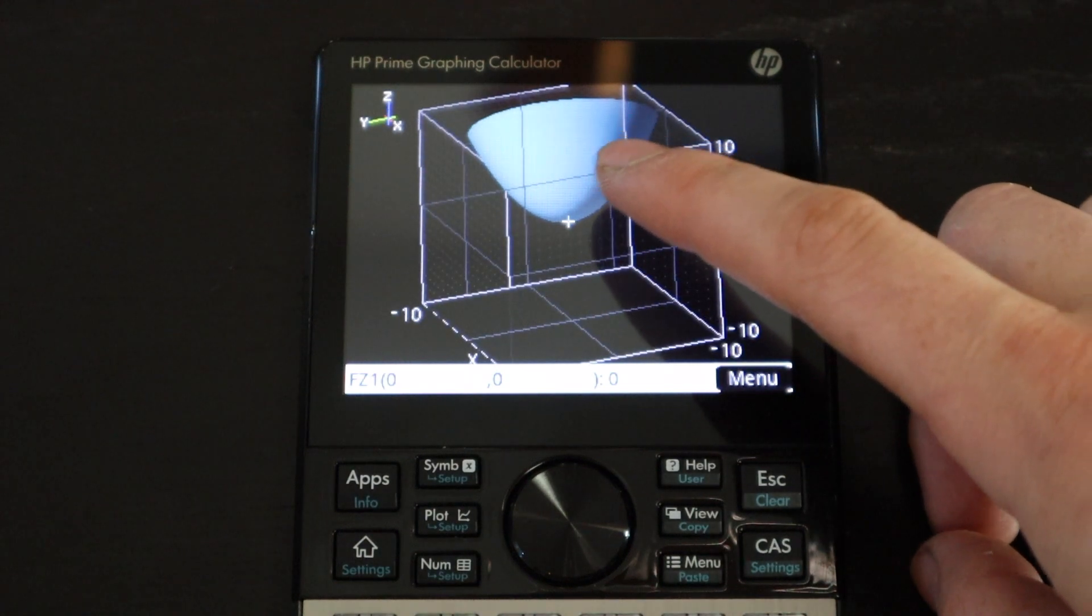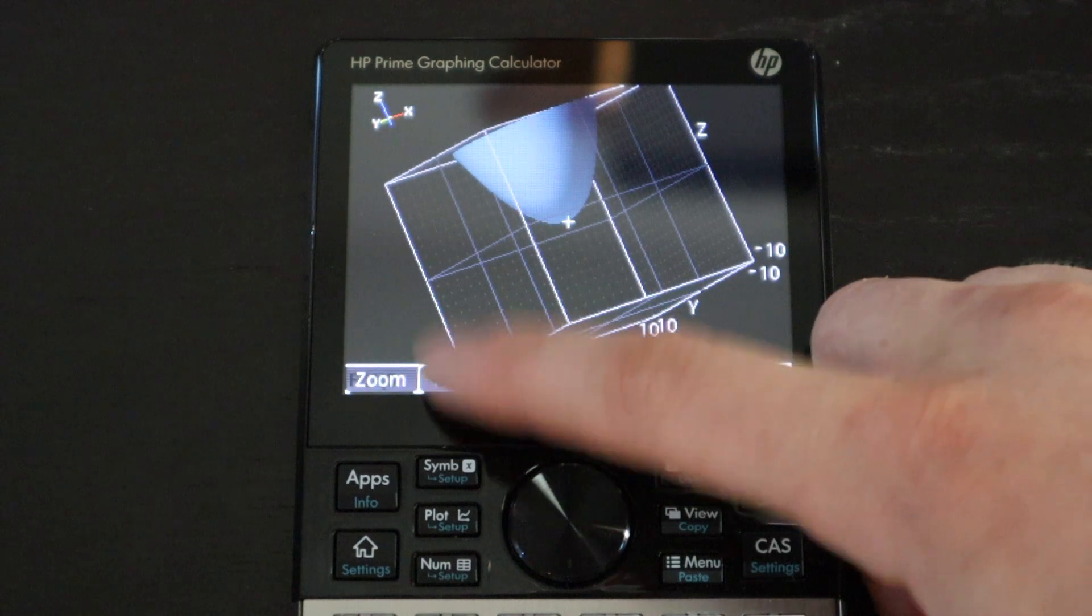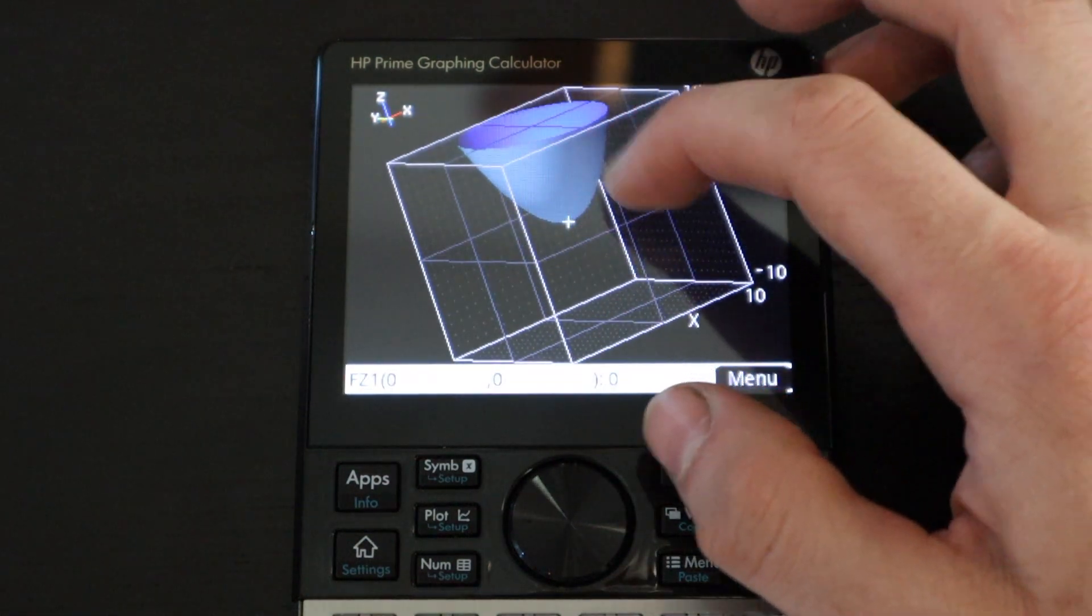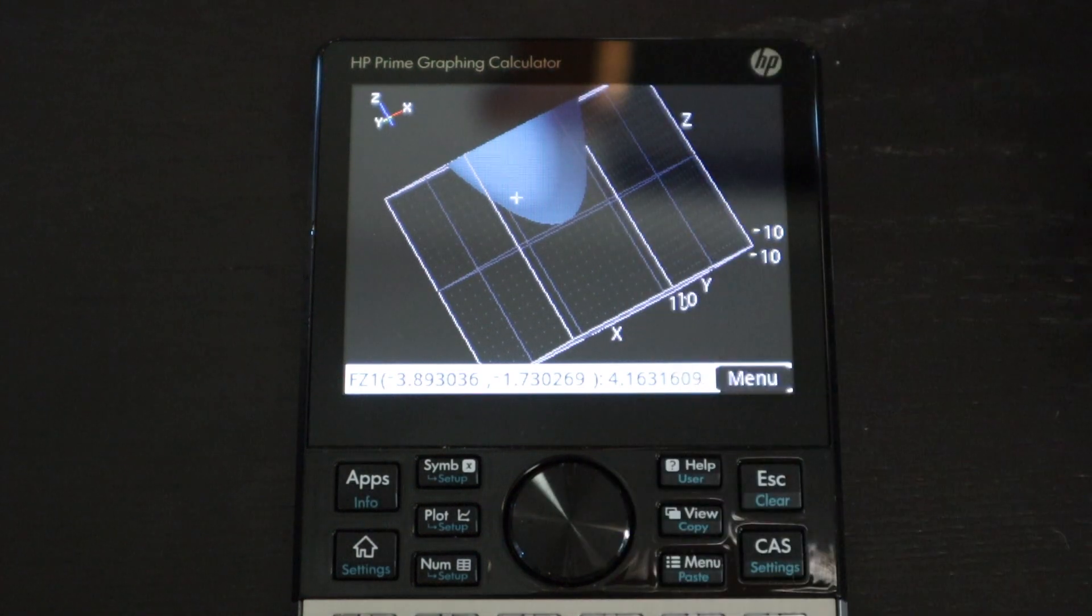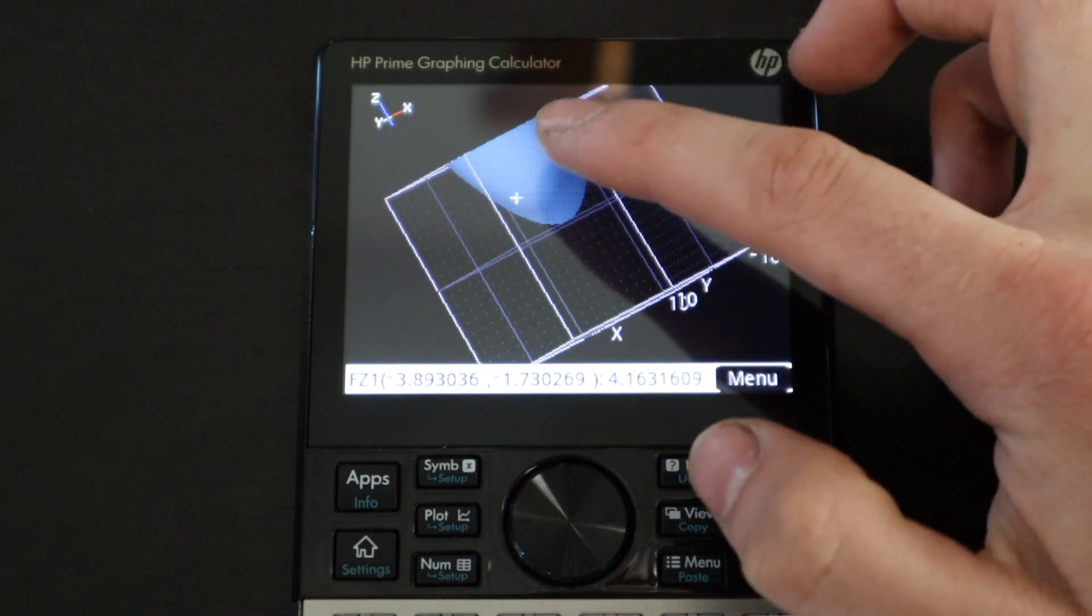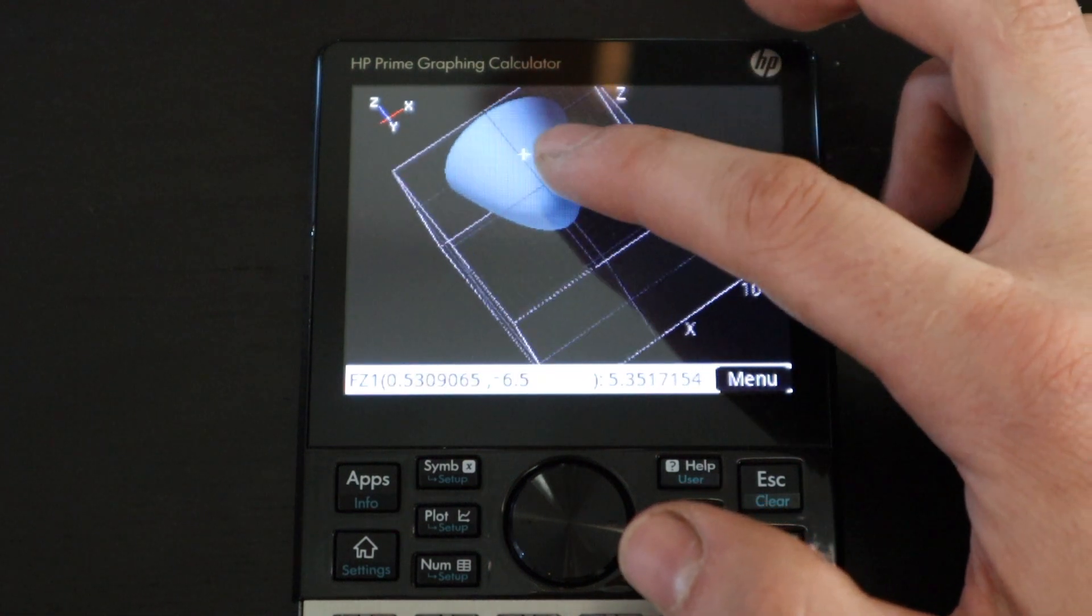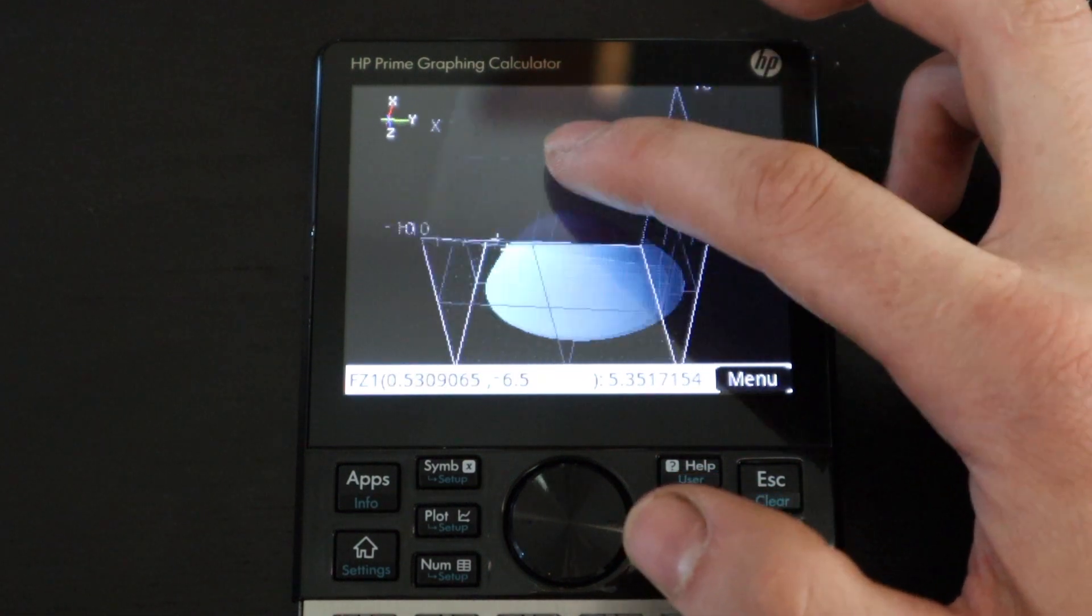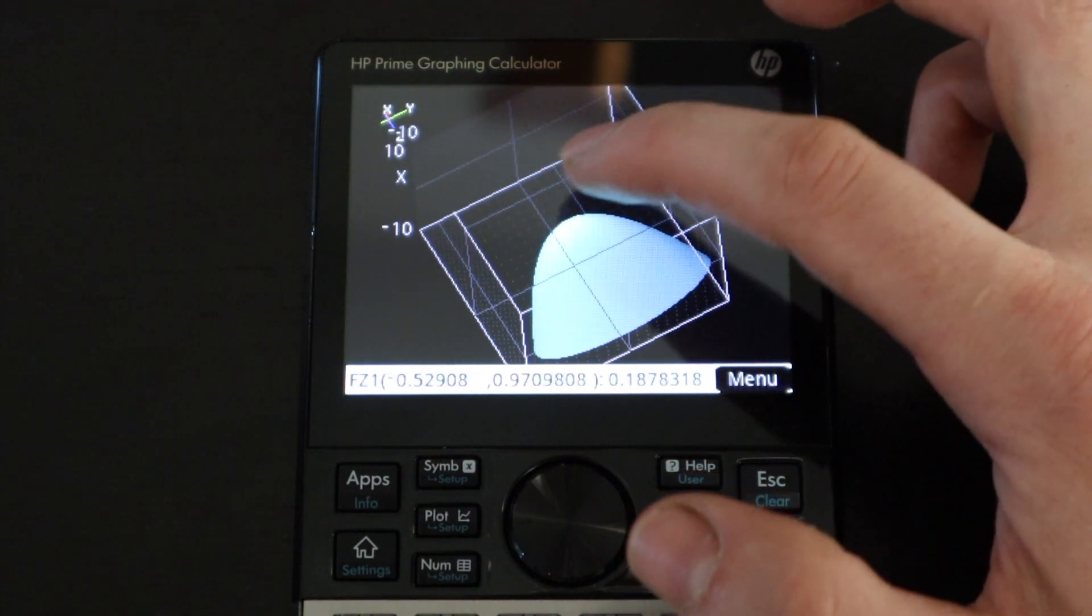You can't do much more than get a picture of the graph. There is a trace function. However, I find it to be quite useless because there's no way that I know of to input a Z, X, or Y value and then have it give you an output. So, if I was trying to find the minimum of this function, for example, I would have to kind of guess and sort of tap.